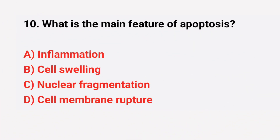Question number 10: What is the main feature of apoptosis? The right answer is option C: Nuclear fragmentation.